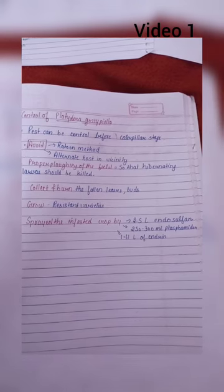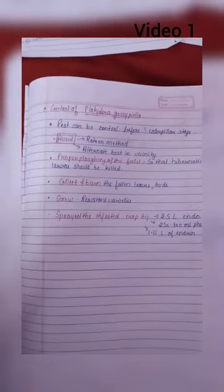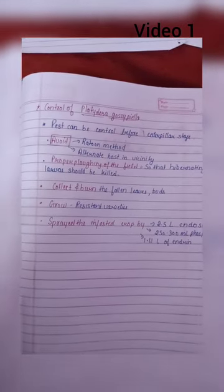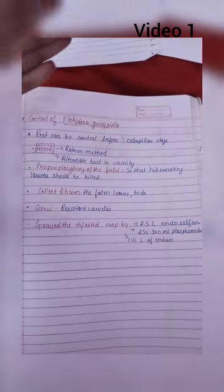Use Dicofol 300 ml, Monocrotophos, and Endrin 1.61 liters. These are some methods by which we can control Platyedra gossypiella pest. This is what I have written, so remember it.